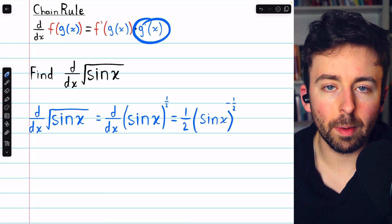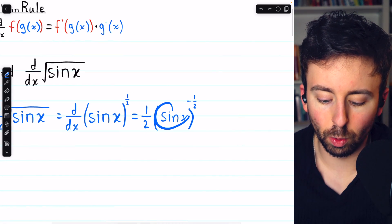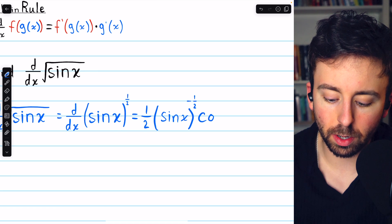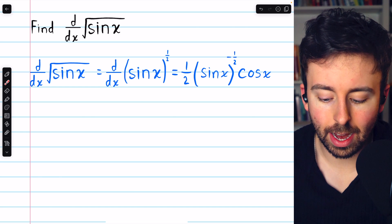Then, to finish this off, we just have to multiply by the derivative of the inside function. Multiply by the derivative of sine, which we know to be cosine. And so that's our answer, the derivative of the square root of sine x.